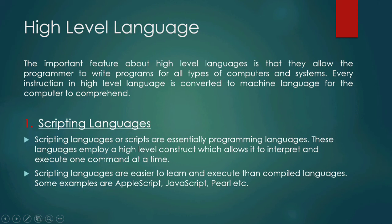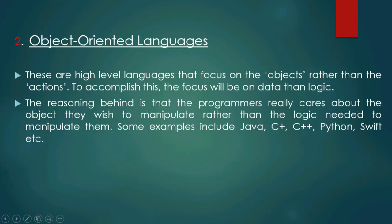The second type is object-oriented language. Object-oriented programming means the concept of writing programs is entirely different — it is based on objects. We use classes for writing an object-oriented program.